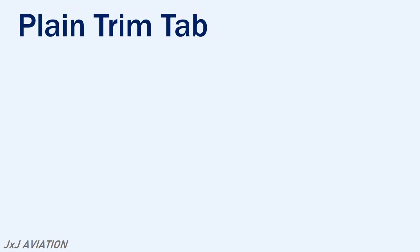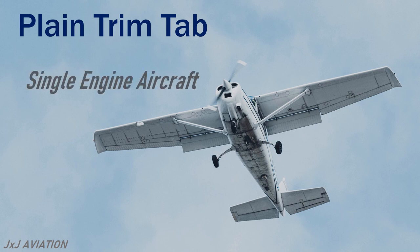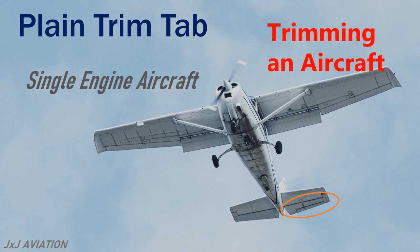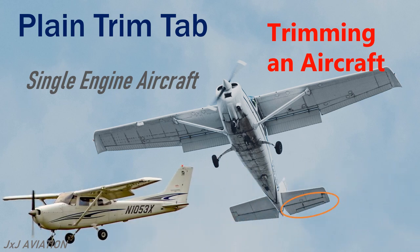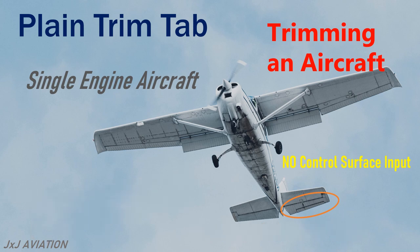A plain trim tab, or a normal trim tab, is normally found on single engine aircraft and will be installed at the trailing edge of the elevator. This trim tab is used to trim the aircraft. Trimming an aircraft refers to maintaining a particular aircraft attitude without continuously giving a control surface input. An aircraft may be trimmed for straight and level flight, a constant rate of climb, or a constant rate of descent.